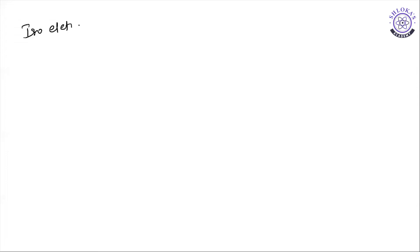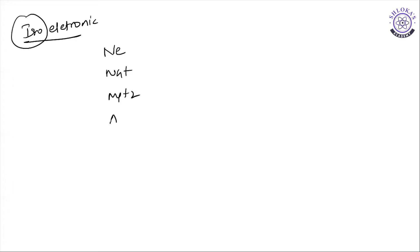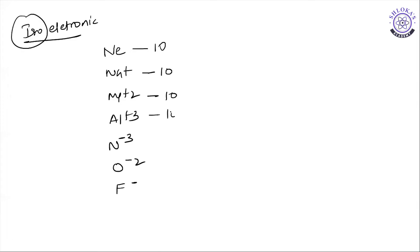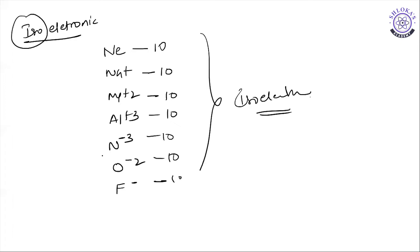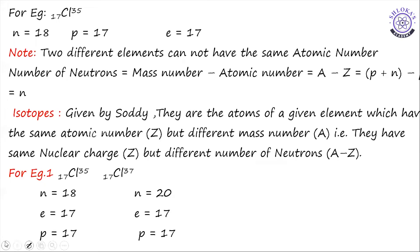Isoelectronic species are atoms, molecules, or ions having the same number of electrons. For example, neon (Ne), sodium-plus (Na⁺), Mg²⁺, Al³⁺, N³⁻, O²⁻, and F⁻ all have 10 electrons each and are called isoelectronic species.